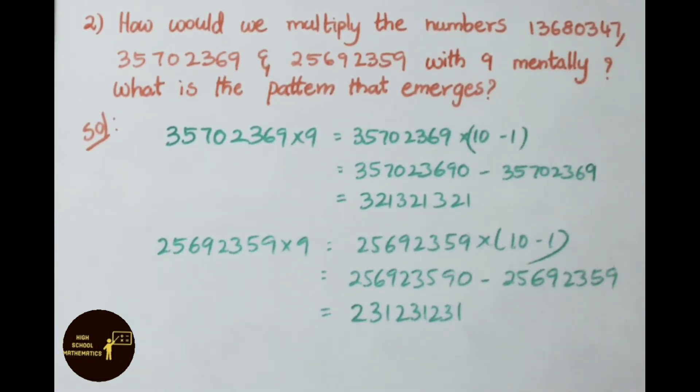Now let us see the working pattern. If any number is to be multiplied by 9, first we have to multiply the given number by 10 and subtract the given number from the product. So we get the result.